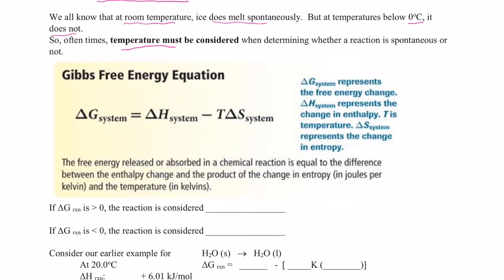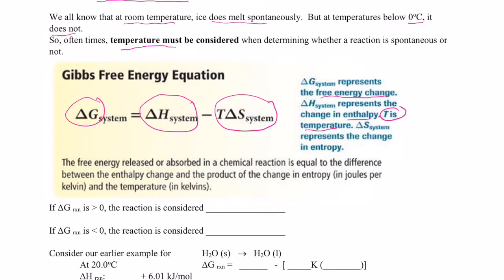Here is the Gibbs Free Energy equation: delta G equals delta H minus T times delta S. Delta G represents the free energy change of the reaction; delta H represents the enthalpy change; T is the temperature, which must be in Kelvin. To convert: take the Celsius temperature and add 273 to get the Kelvin temperature. Delta S represents the change in entropy.